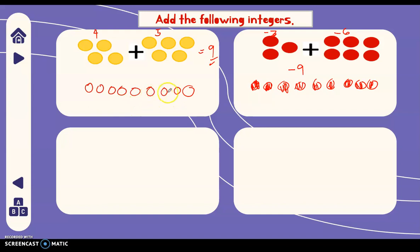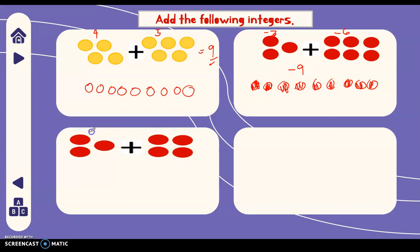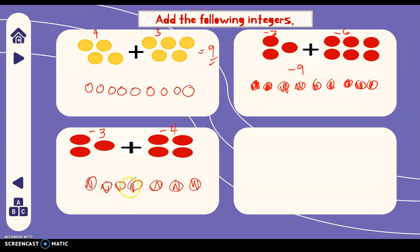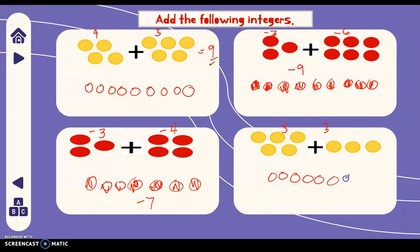Nine positive chips. Next, we have negative three plus negative four. Three negative and then four negative — one, two, three, four, five, six, seven — the answer is negative seven: seven red chips. Next, we have five plus three — they are positive, so you get eight yellow chips. The answer is eight.